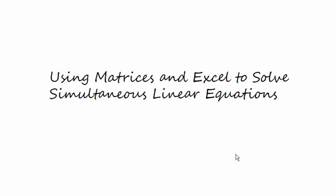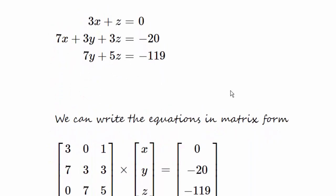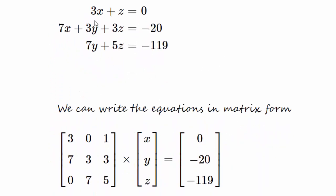In this video we're going to use matrices and Excel to solve three simultaneous linear equations. Imagine we have the equations shown here: 3x plus z equals 0, 7x plus 3y plus 3z equals minus 20, and 7y plus 5z equals minus 119. We can write these equations in matrix form.